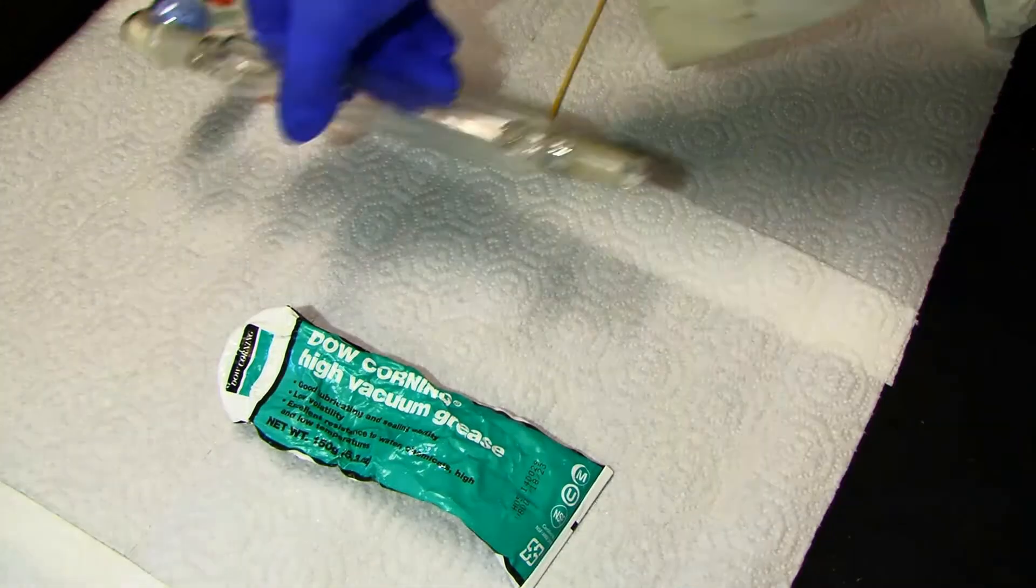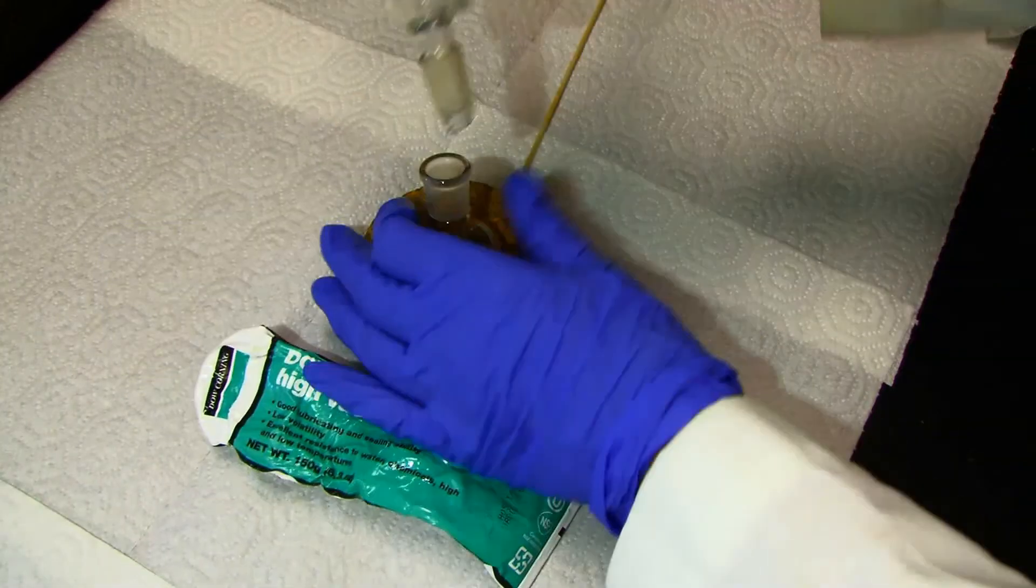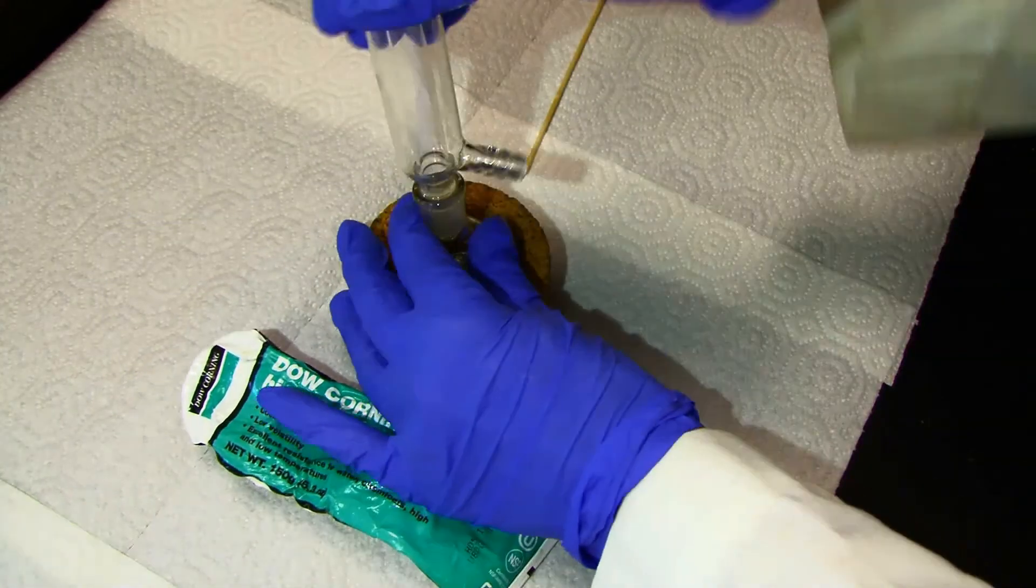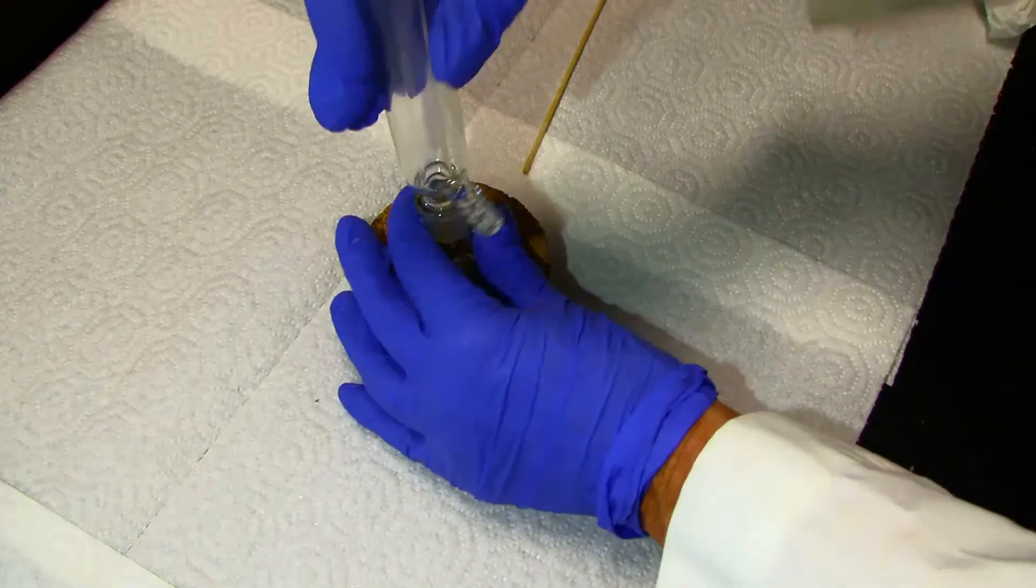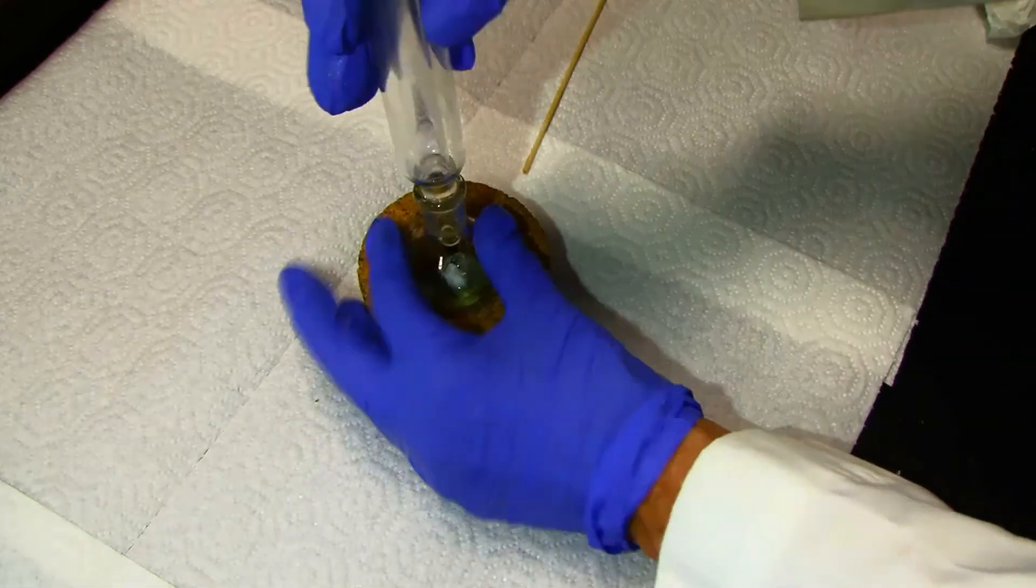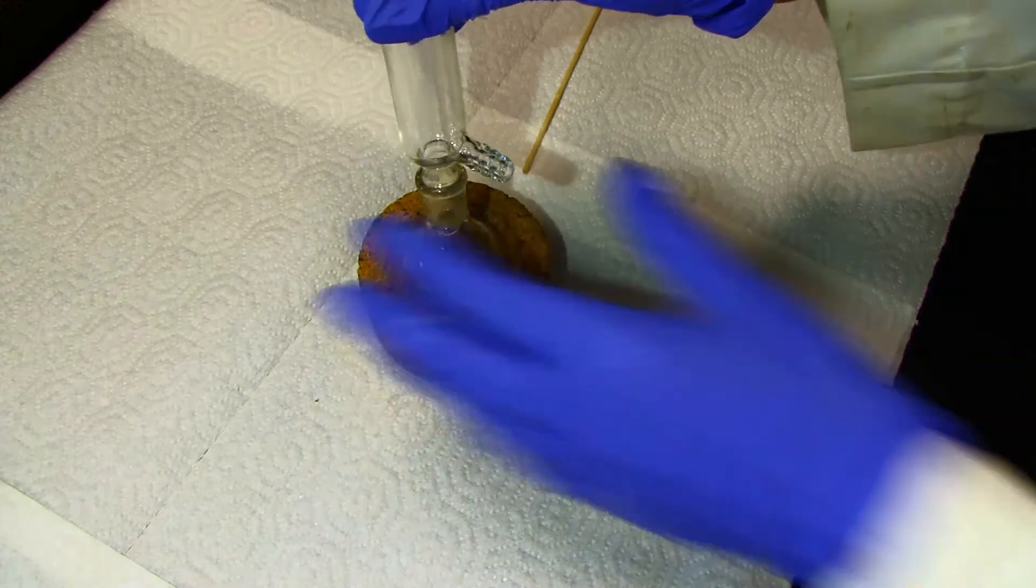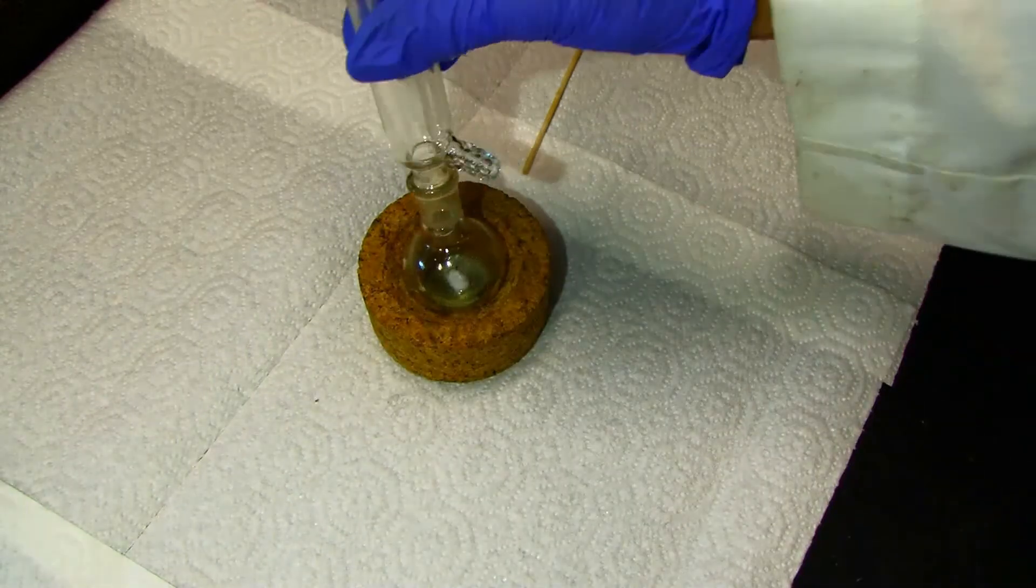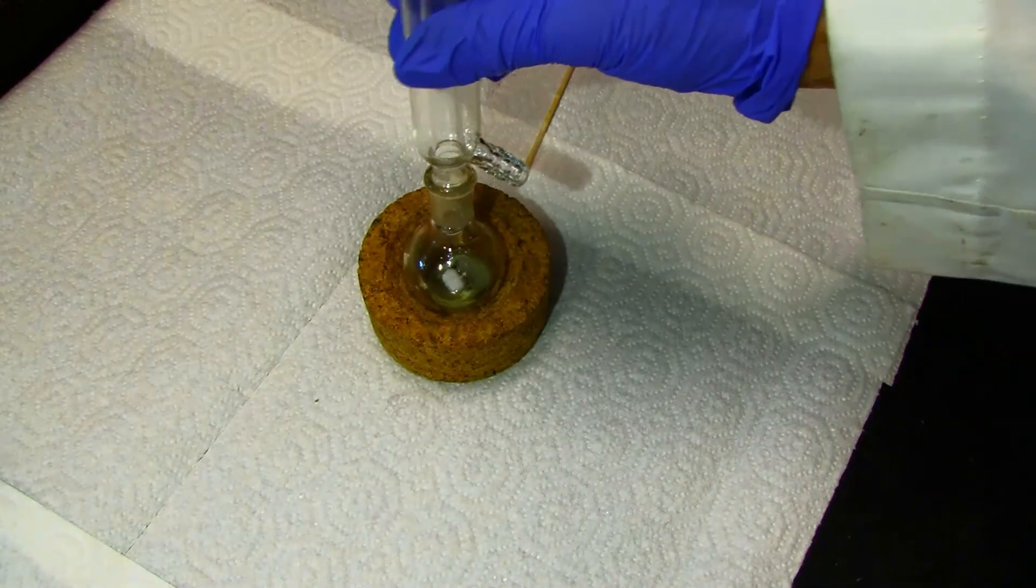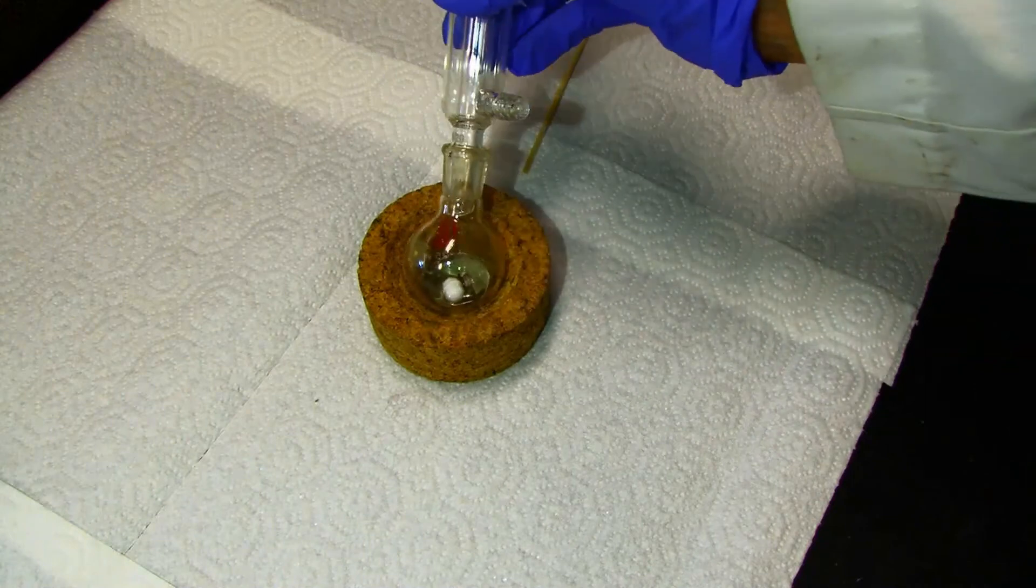And then you take the flask, put the condenser on it, and twist. You should see that now, instead of having the joint be opaque, it is quite clear.